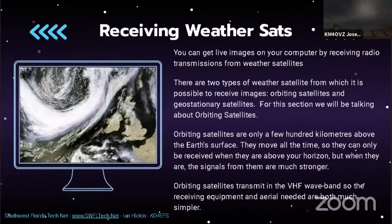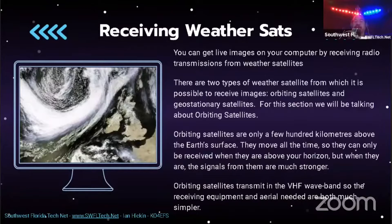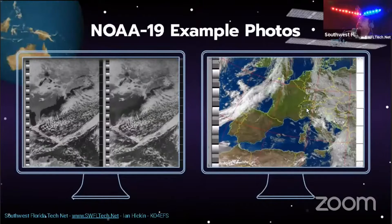There are two kinds of satellites. We're going to talk about geosynchronous satellites next week — we can actually receive images from those as well. Those come in nice and clear, encompass more of the earth, and are received on a higher bandwidth. What we're talking about now is received on the two-meter band. These are polar orbiting satellites, and their orbit brings them over our section every so often. Just about every couple of hours there's one going overhead and you could be getting live data.